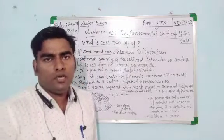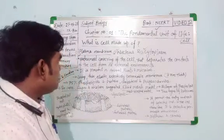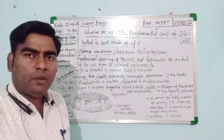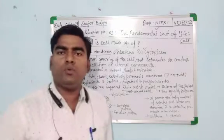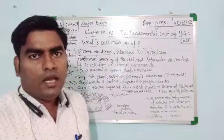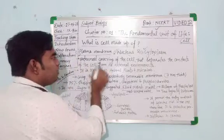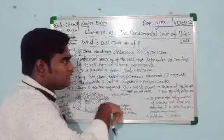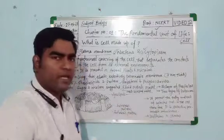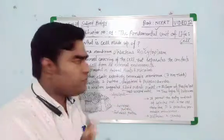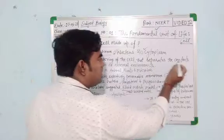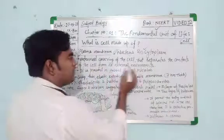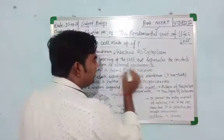Let's start about the plasma membrane. What is plasma membrane? Plasma membrane is also known as cell membrane and it is the outermost covering of a cell, that separates the content of the cell from its external environment.